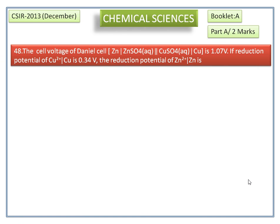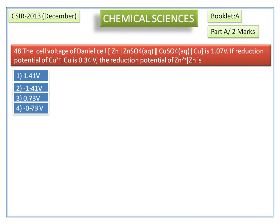The cell voltage of the Daniel cell is 1.07 volts. The reduction potential of Cu²⁺/Cu is 0.34 volts. We need to find the reduction potential of Zn²⁺/Zn; the options are given.